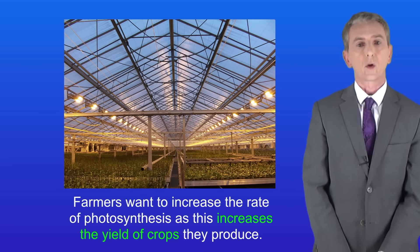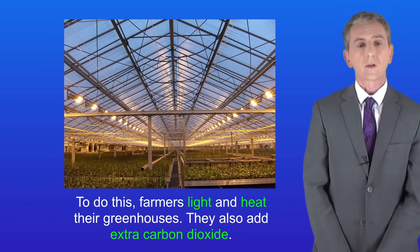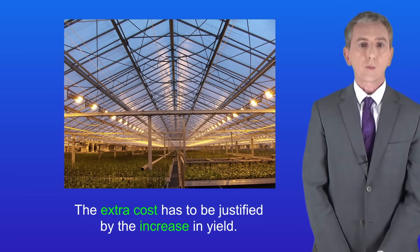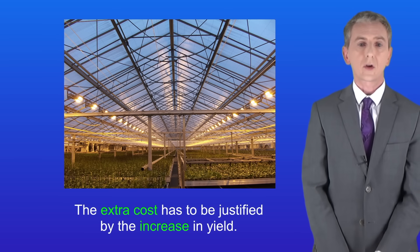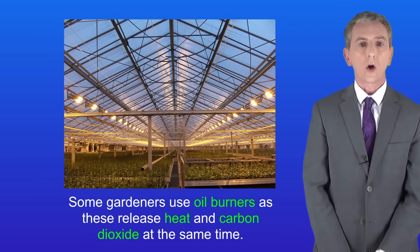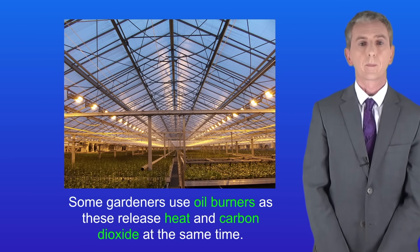Farmers want to increase the rate of photosynthesis as this increases the yield of crops they produce. To do this, farmers light and heat their greenhouses and also add extra carbon dioxide. There is a problem here because it's quite expensive to do this, so the extra cost has to be justified by the increase in yield. Some gardeners use oil burners, as these release heat and carbon dioxide at the same time.